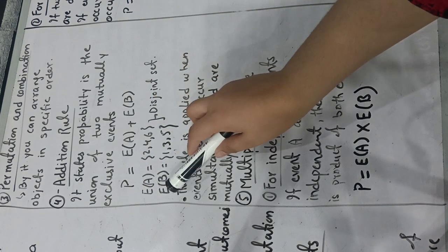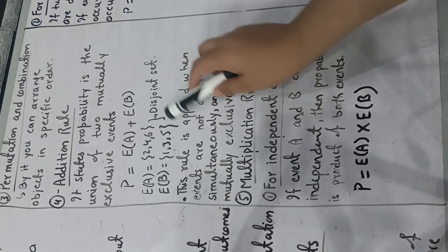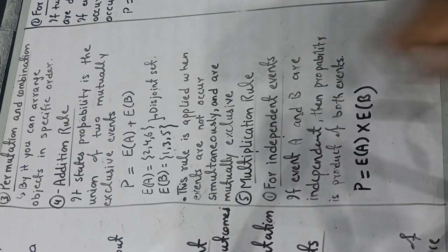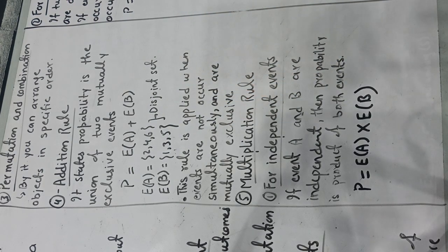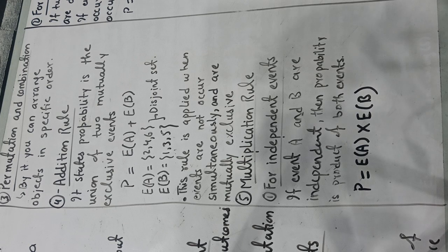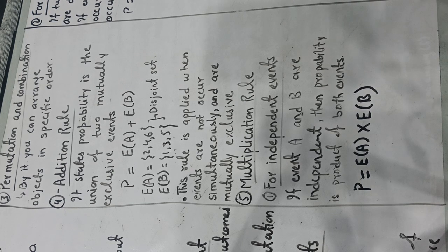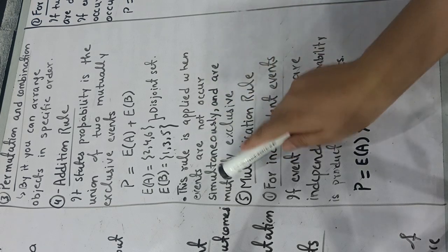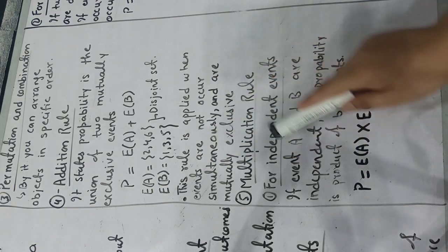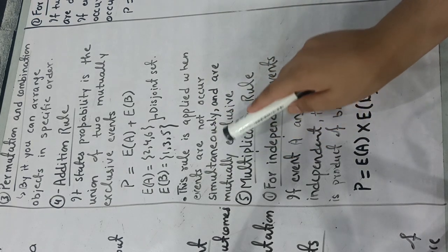We are adding two events, like event A which is even numbers and event B which is the set of odd numbers. This disjoint set means this set has nothing common between them. So this rule will always apply when you have events that do not occur simultaneously, so you have to make events mutually exclusive.